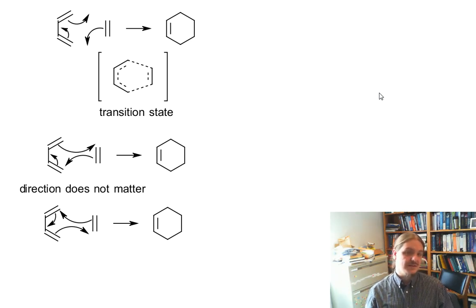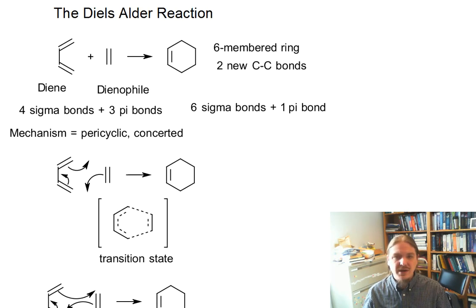In this case, with everything going on at once, the dienophile is not the starting point, diene is not the starting point, there's not one alkene or another. So it doesn't matter whether you draw clockwise or counterclockwise.